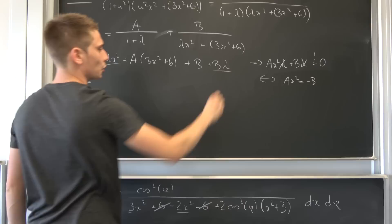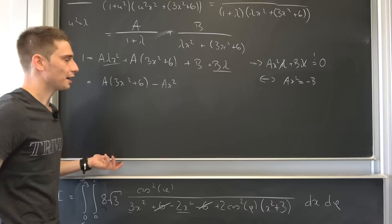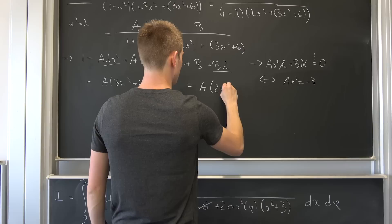So we end up with this and that are going to cancel out in the process. So we have A times 3x squared plus 6 minus A x squared. And you see, we can just factor out an A and 3x squared is going to cancel out kind of with this x squared to 2x squared. So we end up with A times 2x squared plus 6 in the process.